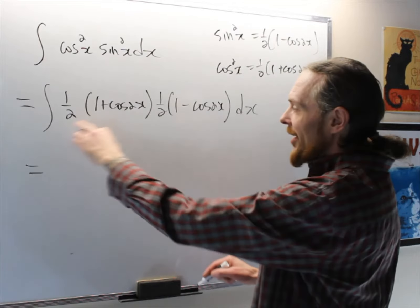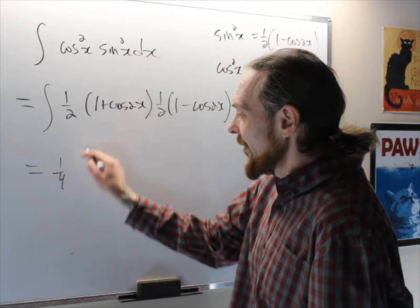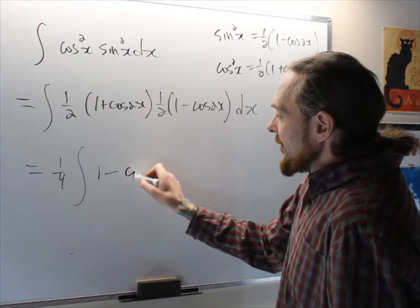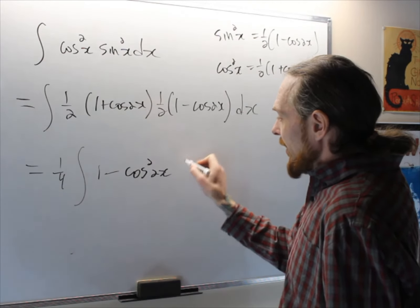Plus, I have 1 half times 1 half, so I have 1 fourth, the integral of 1 minus cos squared 2x dx.